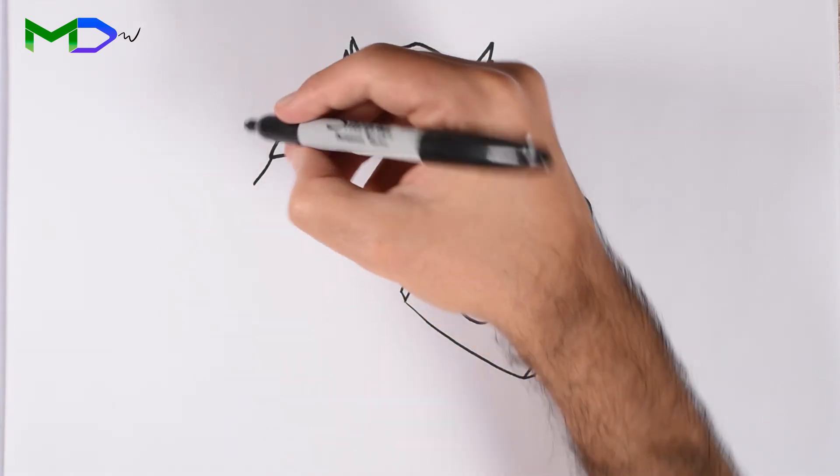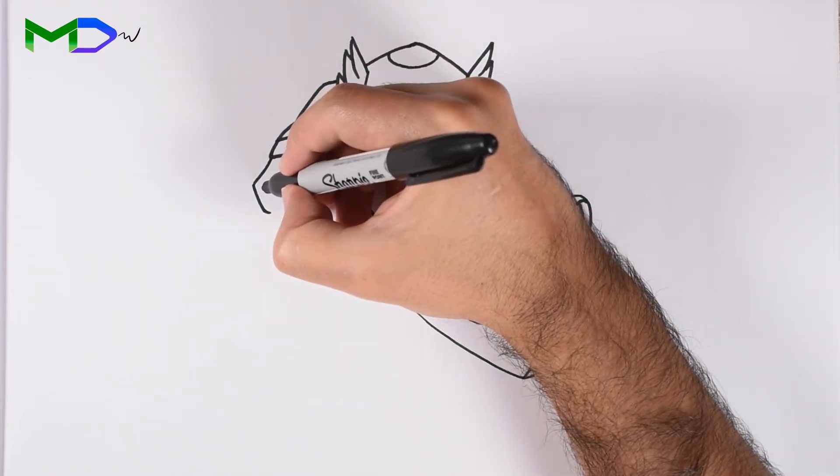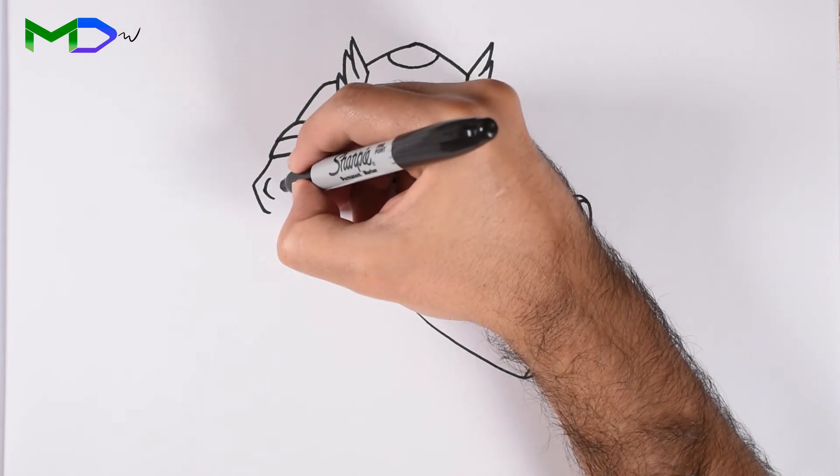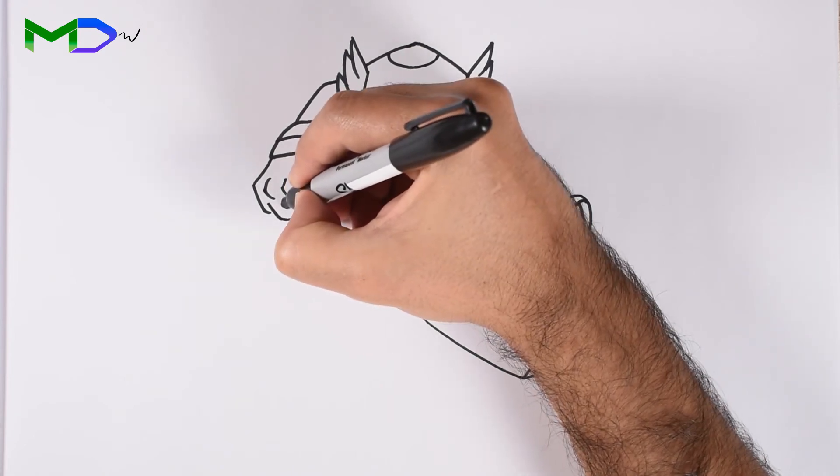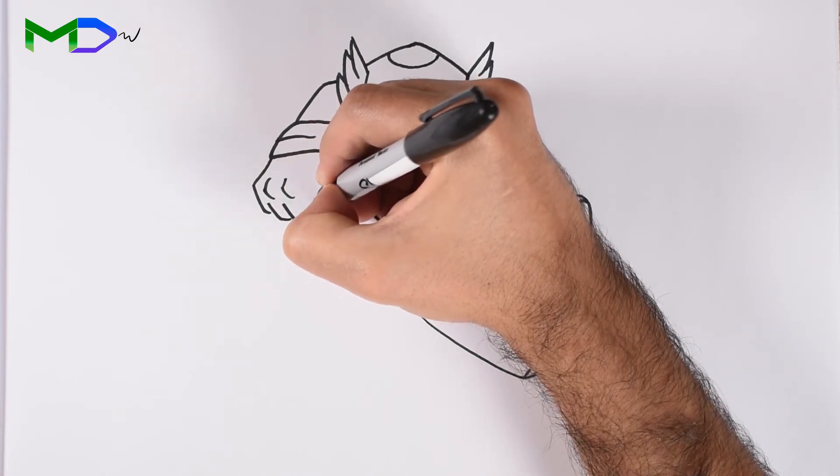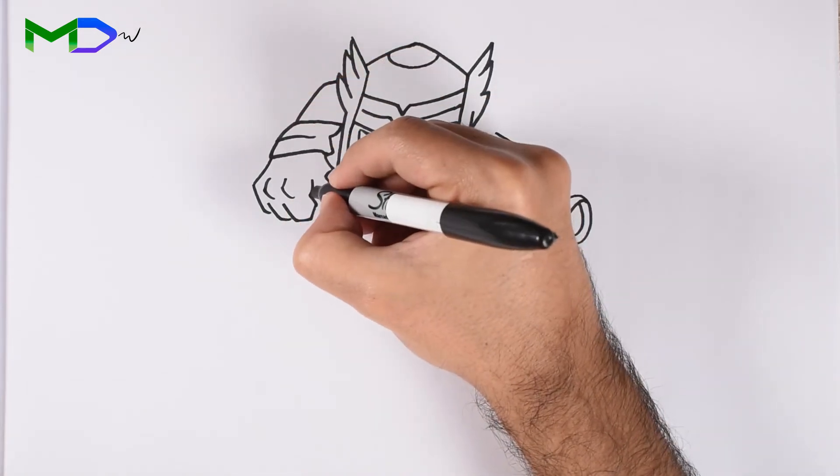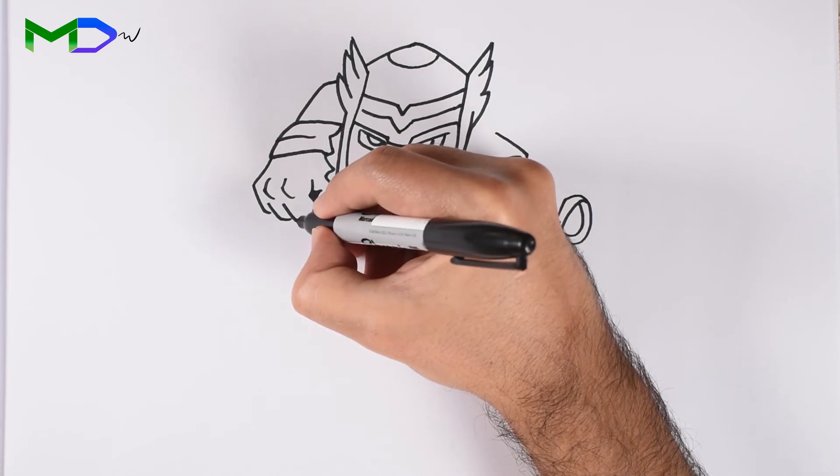And then the fist, draw a line, then like two C shapes. And then create the fingers. Finally the thumb and finish the gaps.